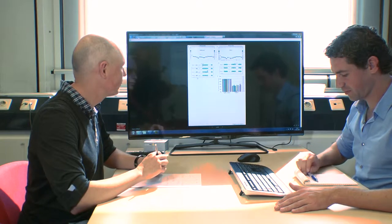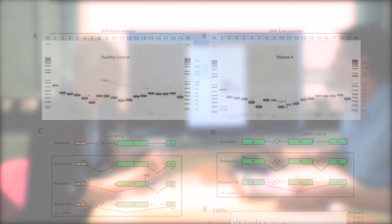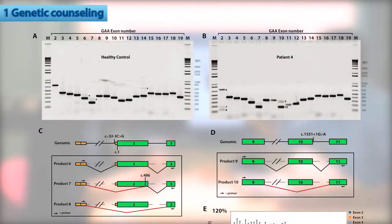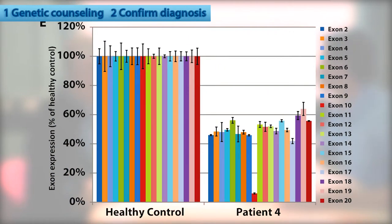Now why is this method interesting? First, it is important for genetic counseling. So family members can be tested for the same variant. Second, the patient often wants to confirm the diagnosis on the DNA level.